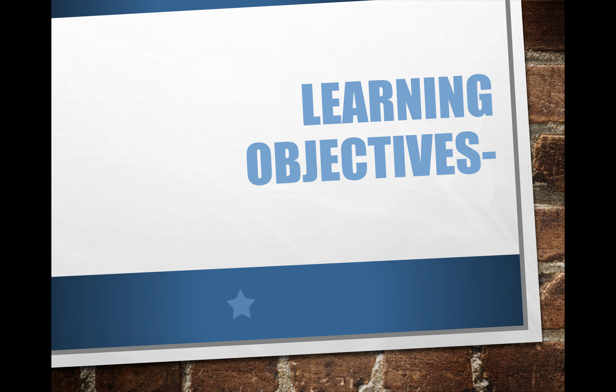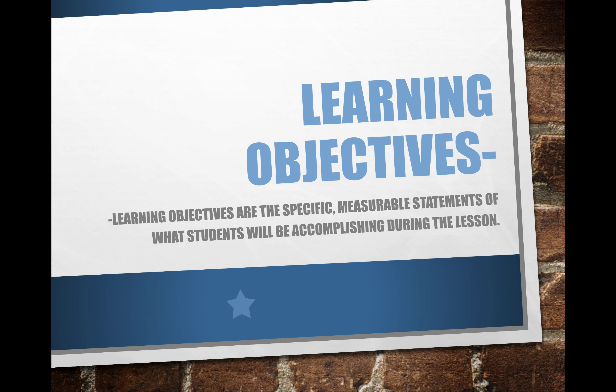Now that we've gotten down how to write a learning target, let's go over the differences between learning targets and learning objectives. We've talked extensively about how learning targets are super general and broad in terms of student achievement. Learning objectives are the more clear, specific, measurable goals we have for our students in particular lessons — specific, measurable statements of what students will be able to accomplish during the lesson.